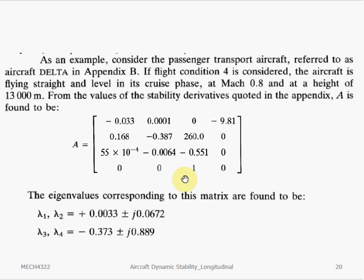From this A matrix, we can easily compute the eigenvalues. A fourth order system would give us four eigenvalues. We have lambda 1, 2, 3, and 4.